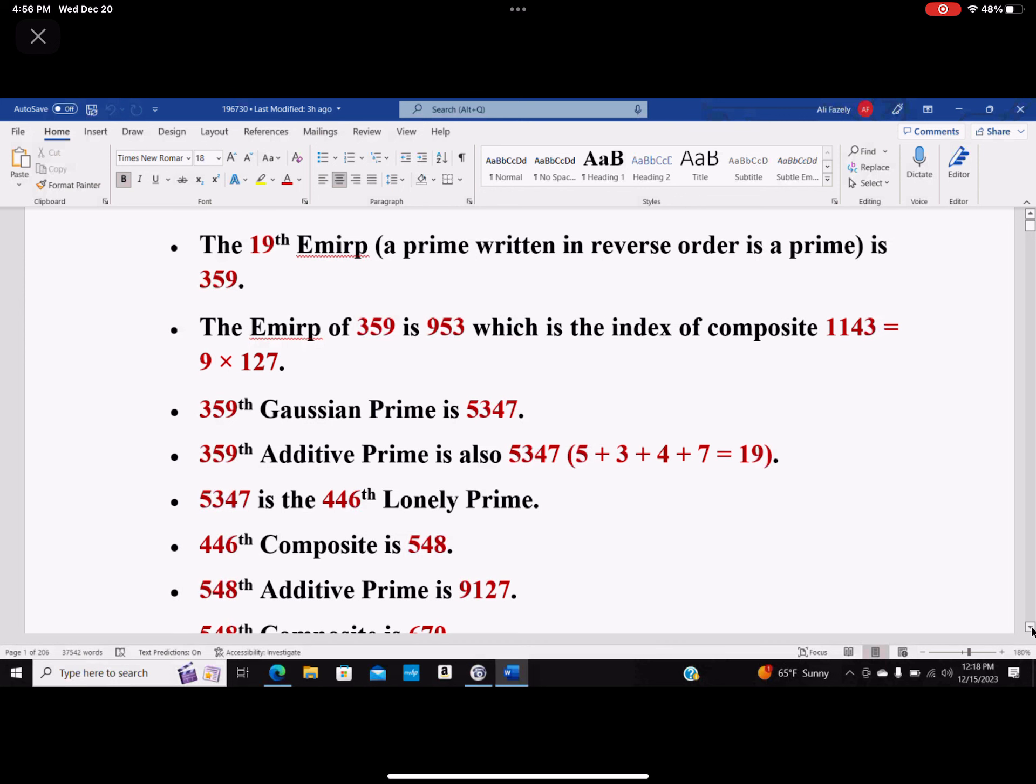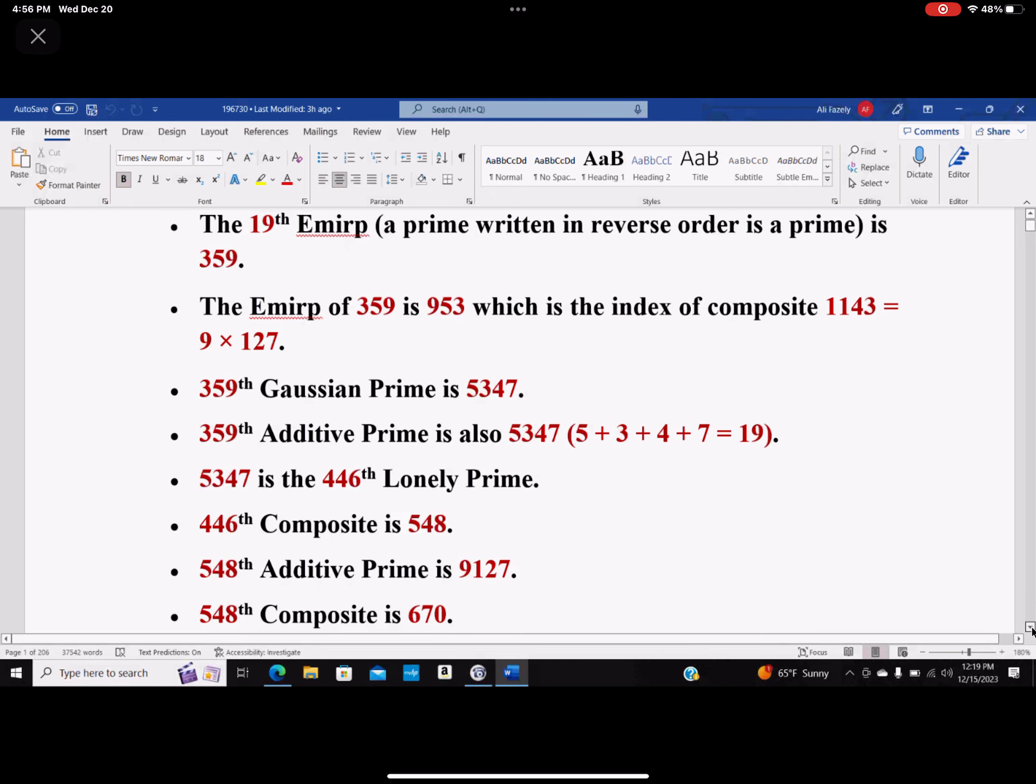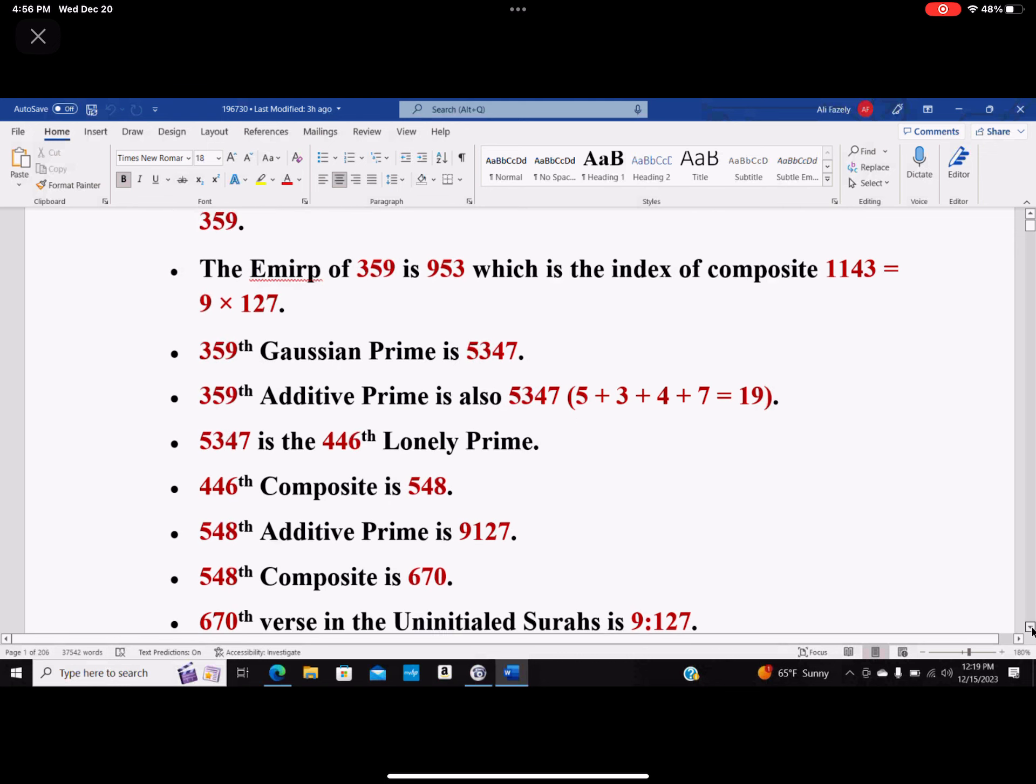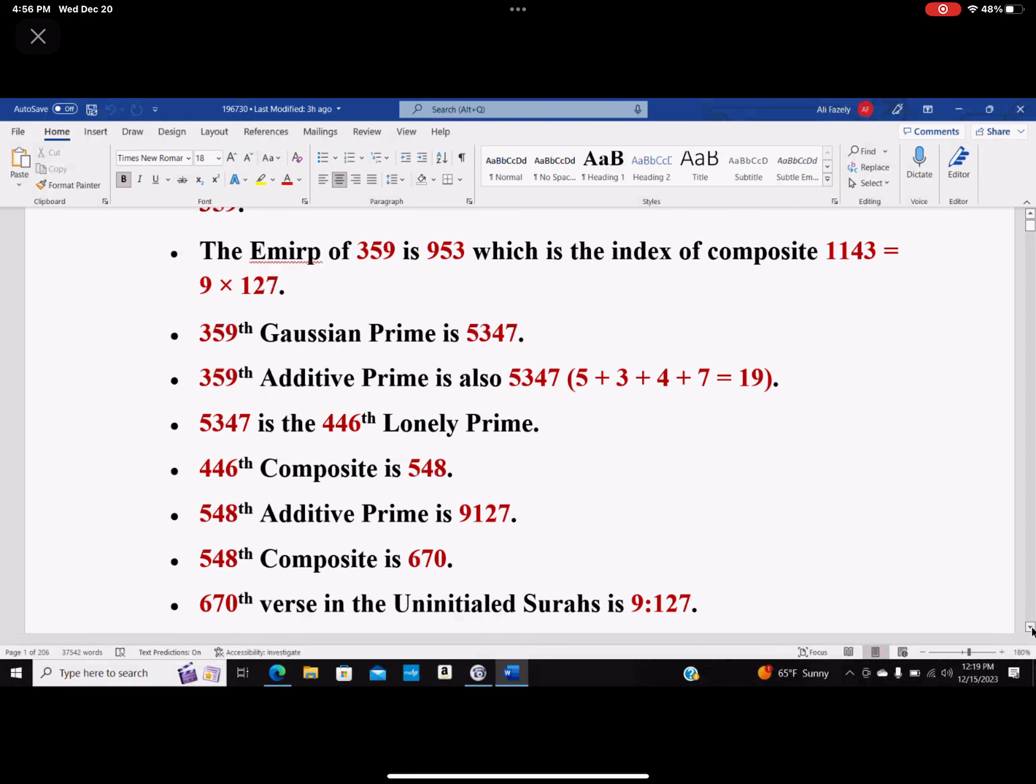As you see, the digits of 9127 add up to 19, which is a prime number, so 9127 also happens to be an additive prime, and its index is 548. The 548th composite is 670, and 670th verse in the uninitiated surahs in the Quran is 9:127. So can you imagine this? I mean, God is not going to let you go.